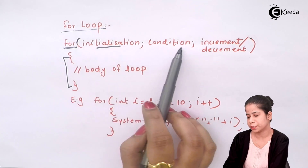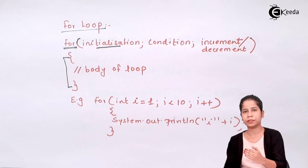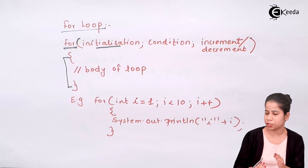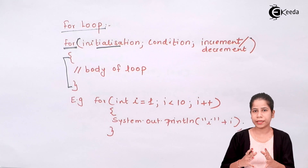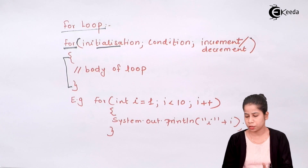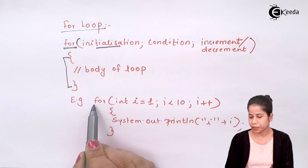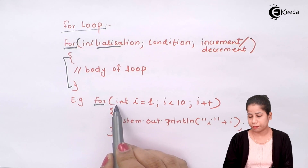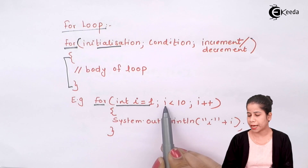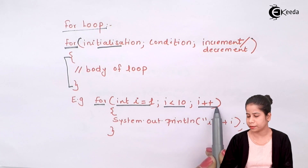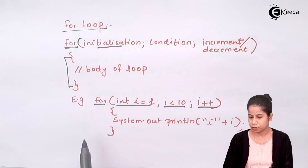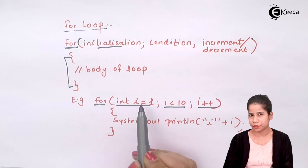Even though initialization, condition, and increment/decrement are written in one line, the execution is a bit different. For example: 'for (int i = 1; i < 10; i++)' — here i is initialized to 1, the condition is i less than 10, and i++ is the increment. First, the variable i is initialized to 1.